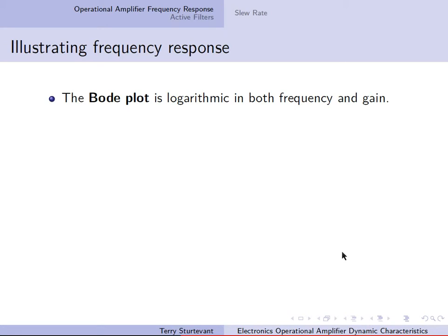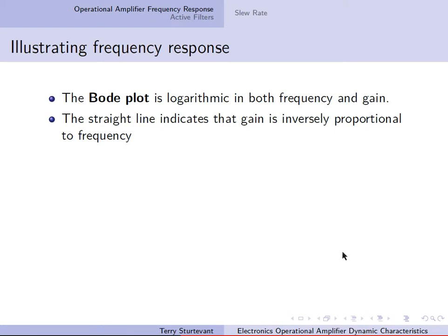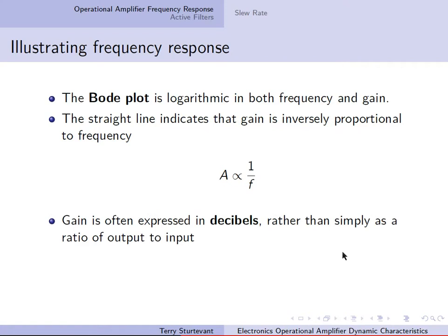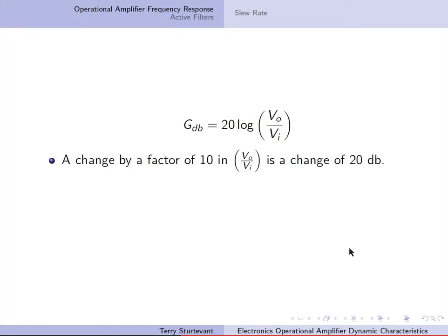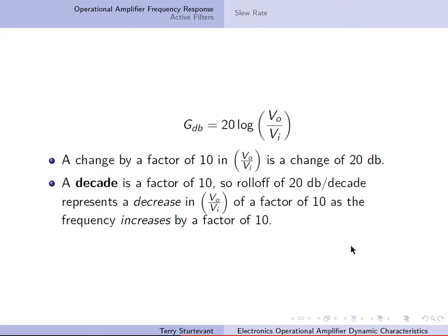A Bode plot is logarithmic in both frequency and gain. The straight line indicates the gain is inversely proportional to frequency — that is, gain is proportional to 1 over f. The gain is often expressed in decibels rather than simply as a ratio of output to input. The gain in decibels is 20 times the log of Vout over Vin. A change by a factor of 10 in Vout over Vin is a change of 20 decibels. A decade is a factor of 10, so a roll-off of 20 decibels per decade represents a decrease in the ratio of Vout to Vin by a factor of 10 as the frequency increases by a factor of 10.